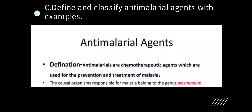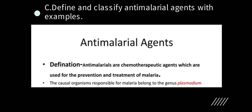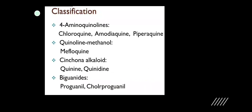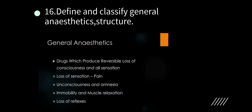Define and classify anti-malarial agents with examples. Anti-malarial agents are chemotherapeutic chemicals or drugs used to prevent and treat malaria. The causal organism responsible for malaria belongs to the genus Plasmodium. Classification: aminoquinolines (e.g., chloroquine); quinoline methanol compounds (e.g., mefloquine, quinine); and biguanides (e.g., proguanil). Remember a few basic examples from each class.